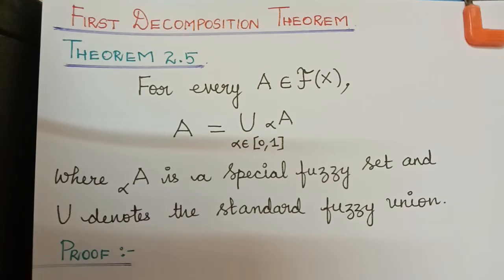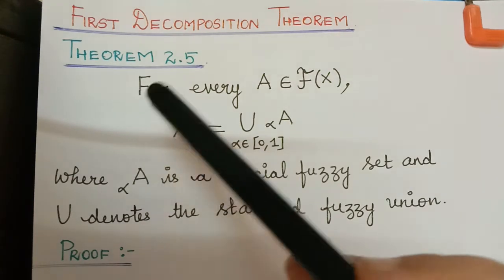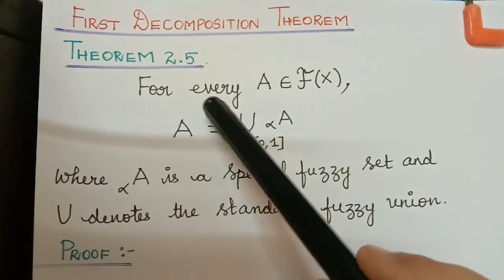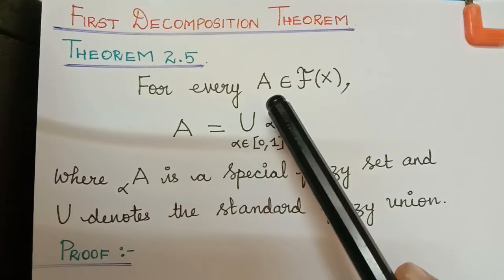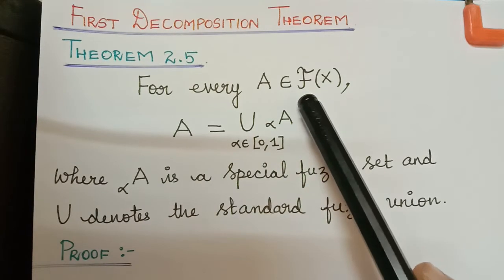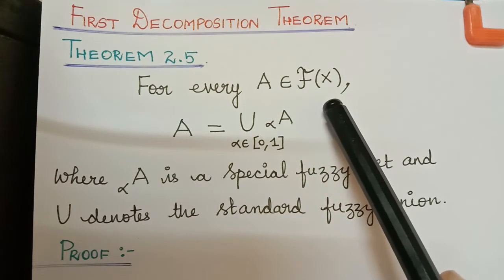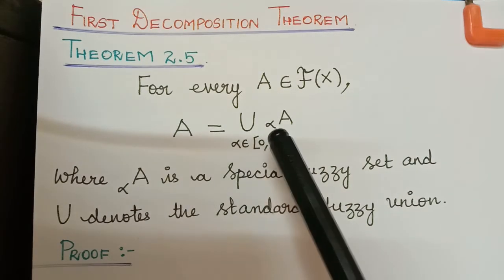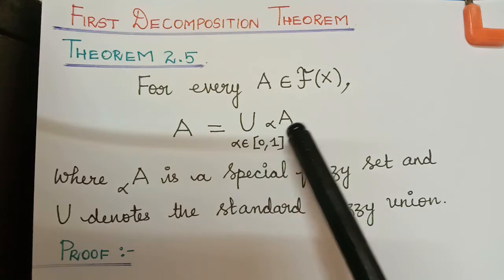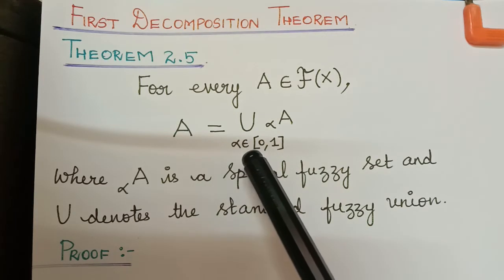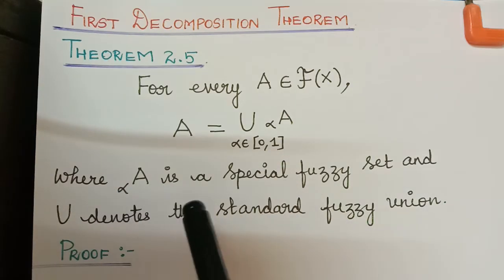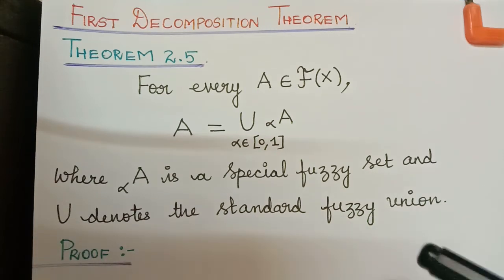Hello students. We shall now learn the first decomposition theorem, Theorem 2.5. For every fuzzy set A, element of the set of all fuzzy sets with respect to the universal set X, A is equal to the union of the special fuzzy set αA, where alpha is an element of the closed interval [0,1], where αA is a special fuzzy set and union denotes the standard fuzzy union.